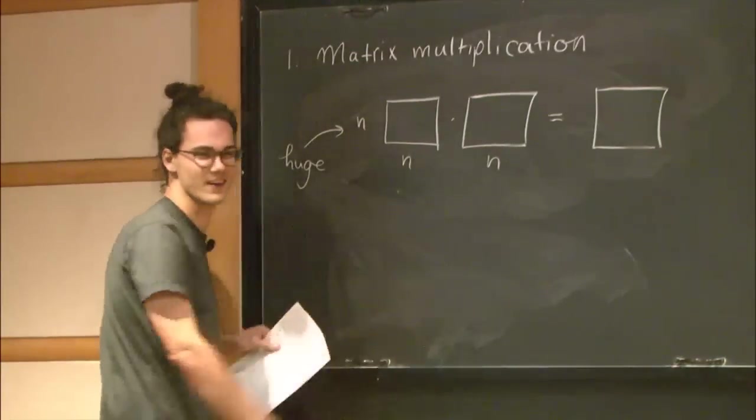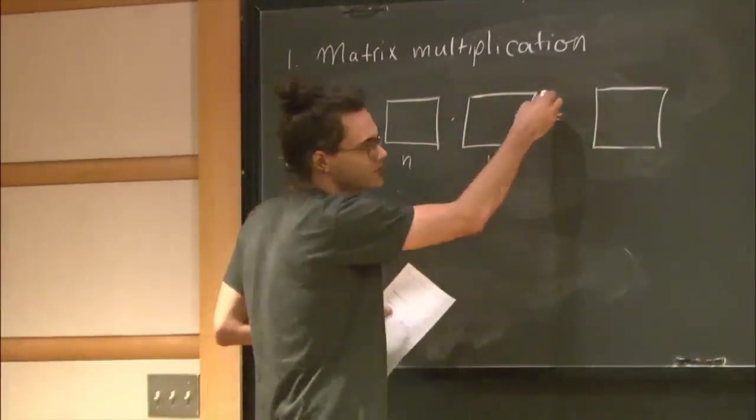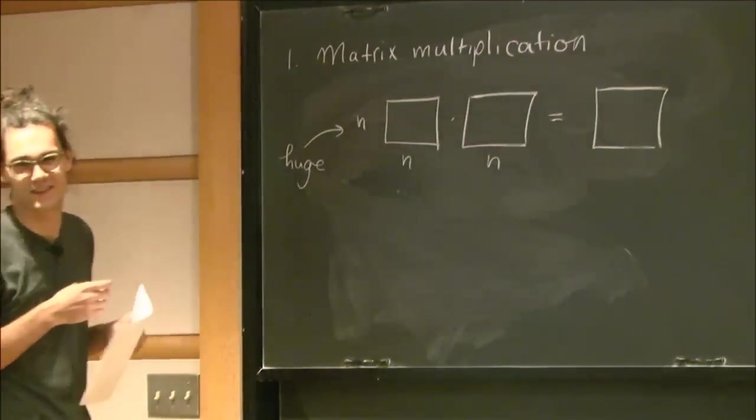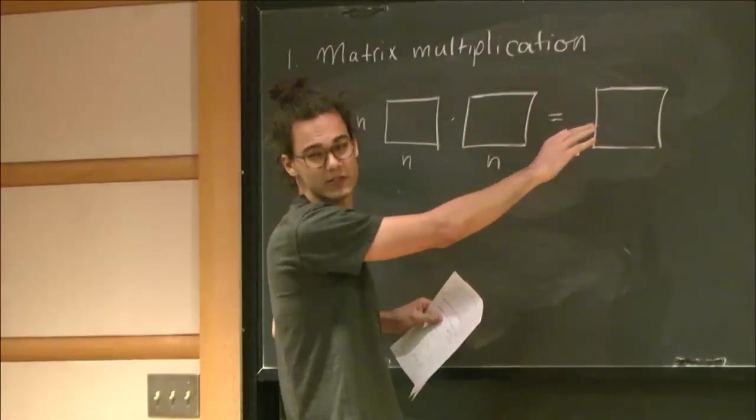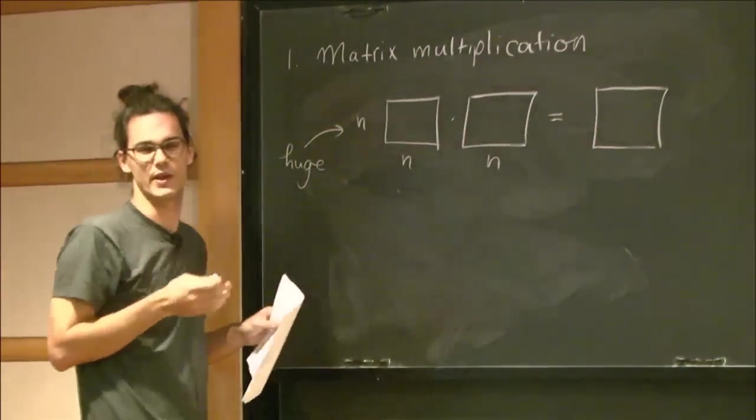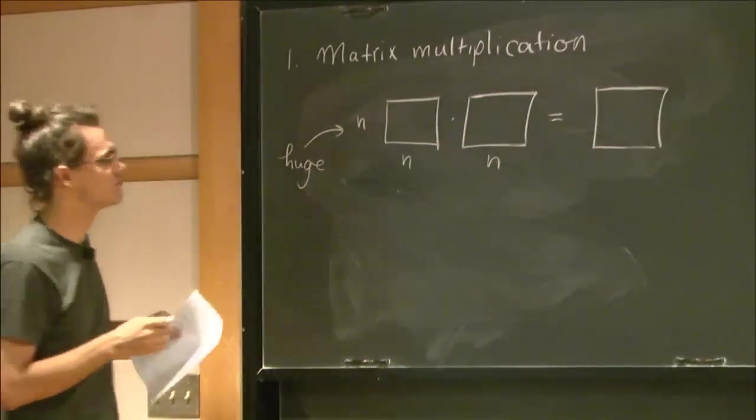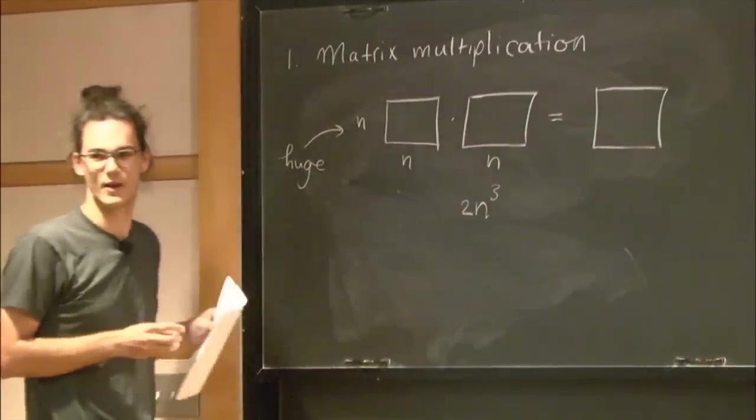So what would you do by hand? You would start computing inner products, right? So there are n squared outputs here, n squared entries in the output. Each one is an inner product. Each inner product will take you like two times n operations. So you can do it in two n cubed, right?